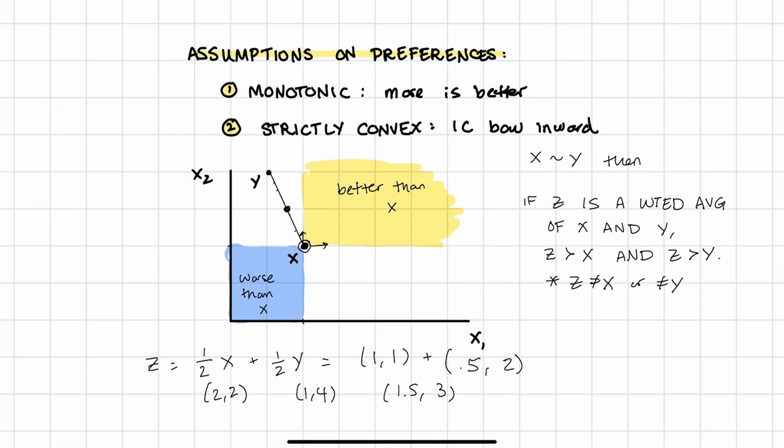And if Z is a little more X than Y, then it's going to be somewhere around here. If Z is a little bit more Y than X, it's going to be around here. But the idea is, with strict convexity, we are going to prefer Z. We always prefer mixes over two bundles that we're indifferent between. So the indifference curve is always going to be bowed inward like this. That's going to be the shape of our indifference curve. We prefer Z to both X and Y when we're indifferent between X and Y, and Z is in the middle. That's what strict convexity means.